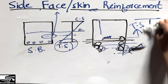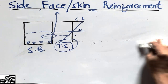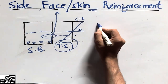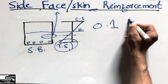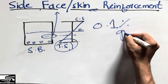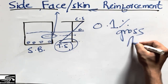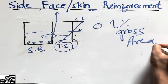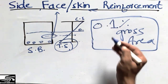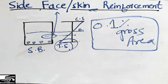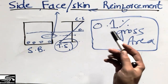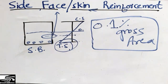It is very important to know how much side reinforcement to provide. As per the code, the side reinforcement should be at least 0.1% of the gross cross-sectional area of the beam. This is the minimum amount of skin reinforcement required when the beam depth exceeds the specified limits.